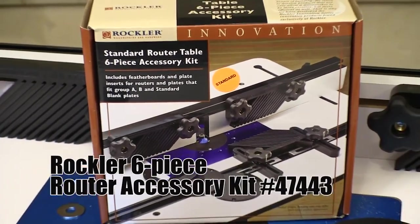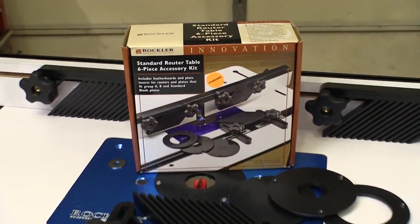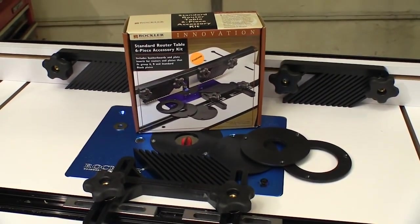Another must-have is this standard six-piece accessory kit for the router table. It gives you three feather boards and three inserts.